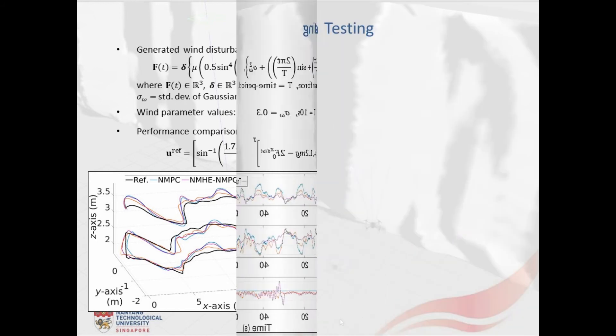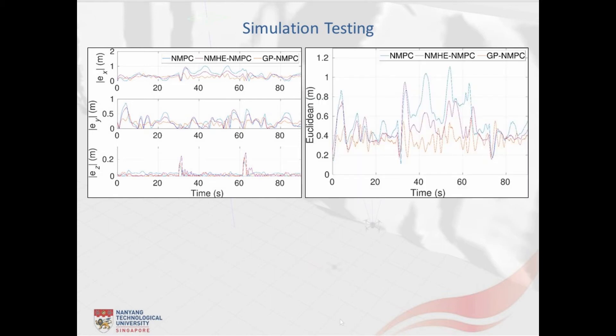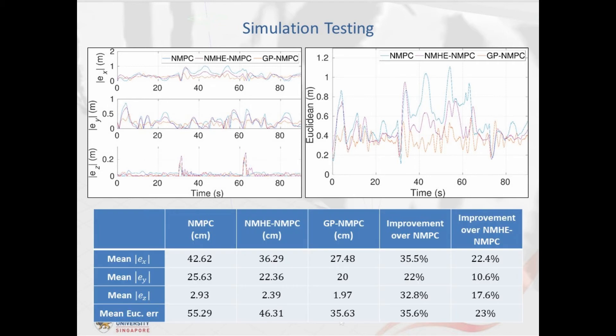For a quantitative comparison, next, we plot the absolute errors along the three directions and the Euclidean error from each controller and list their mean values in the table. As can be visualized, in terms of the corresponding mean absolute errors, the GP-NMPC framework improves the tracking performance by 36, 22 and 33 percent over the conventional NMPC, whereas by 22, 11 and 18 percent over the NMHE-NMPC framework. On the other hand, in terms of the mean Euclidean error, the GP-NMPC framework results in the improvement by 36 percent over the conventional NMPC and by 23 percent over the NMHE-NMPC framework.